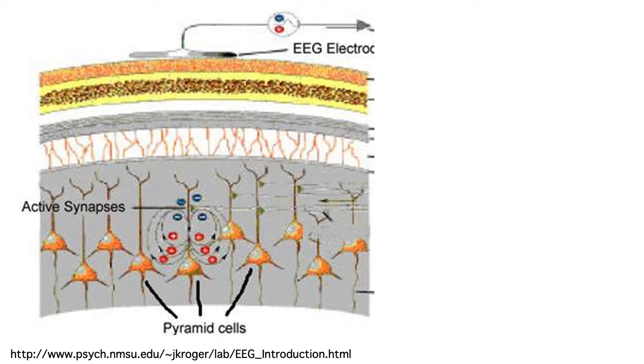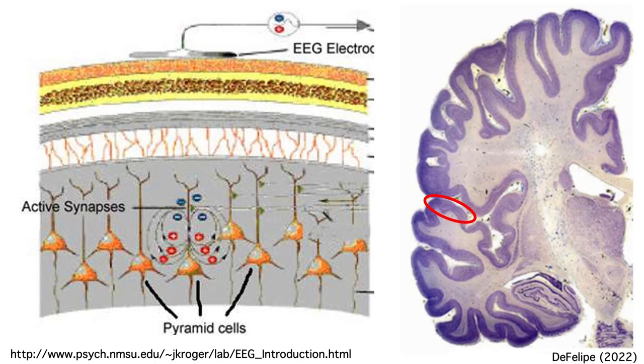ERPs are generated by cortical pyramidal cells during neurotransmission. To be visible on the scalp, a large number of neurons must be active at the same time. Typically, this would be a cluster of neurons in some functionally defined area of the cortex.